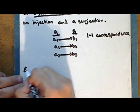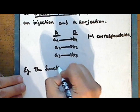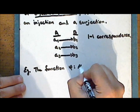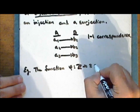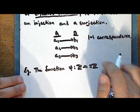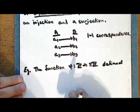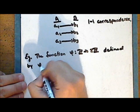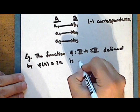Let's look at an example. The function phi from the set of integers into the even integers, defined by phi of a is equal to 2a, is a bijection.